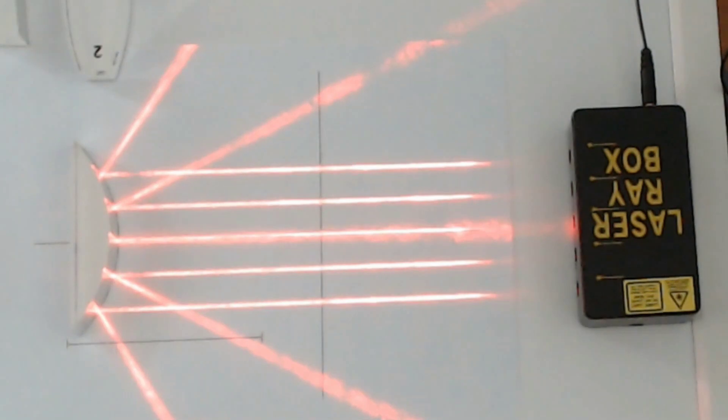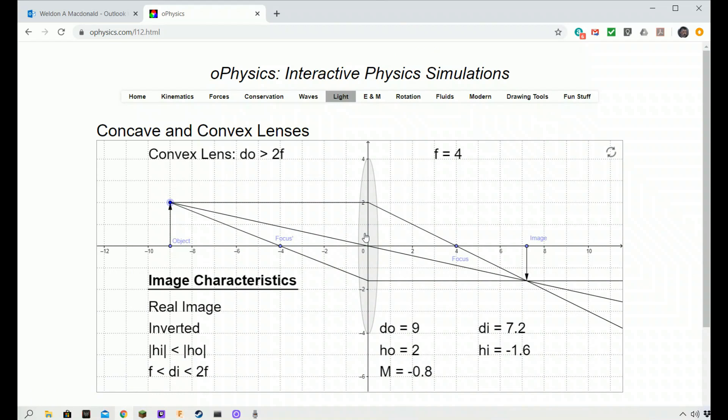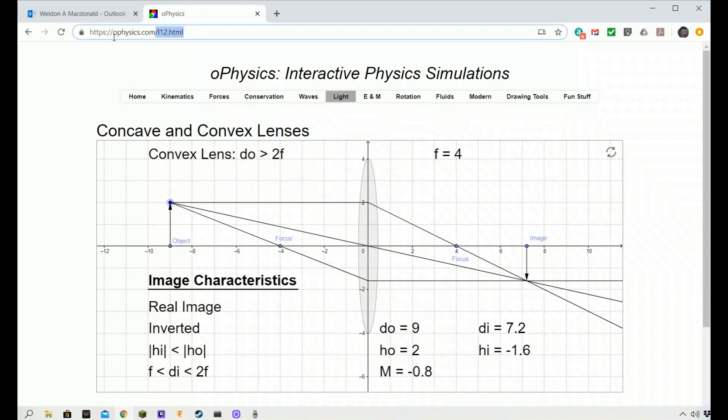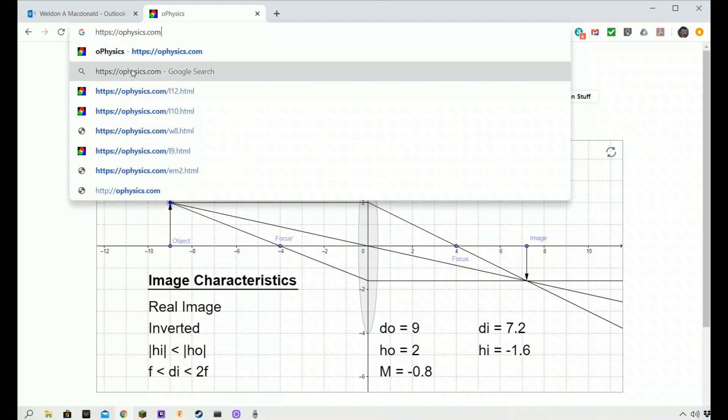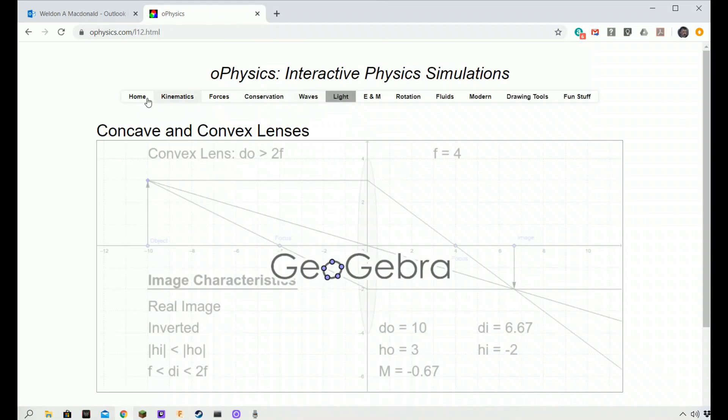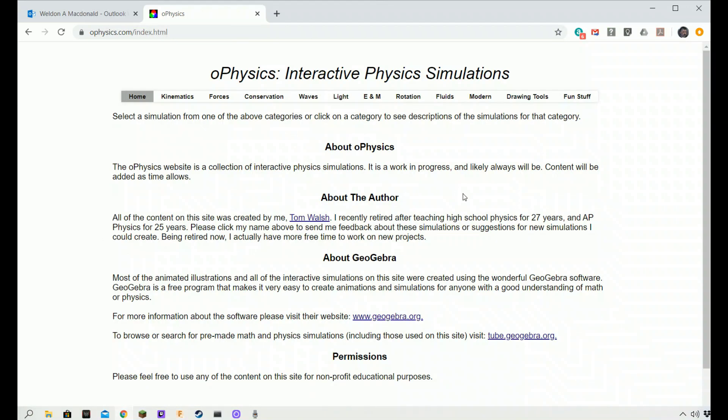But we want to do something else with magnification. And, in the third procedure, you're actually going to use the O-Physics site. This one. I'll give you the link in the Google document. When you go there, you're going to go to this page.